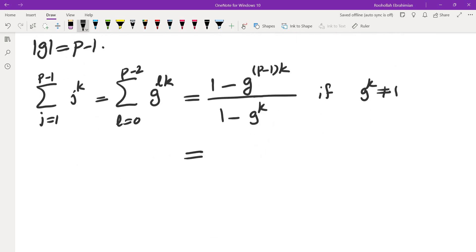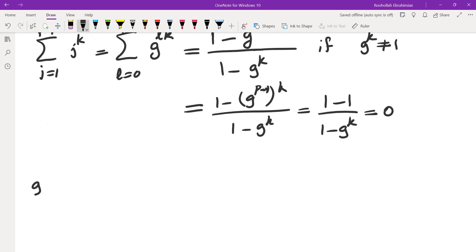Now if g^k is not 1, the numerator becomes 1 - g^((p-1)k) over 1 - g^k. Since g^(p-1) is 1, that would be just 0.